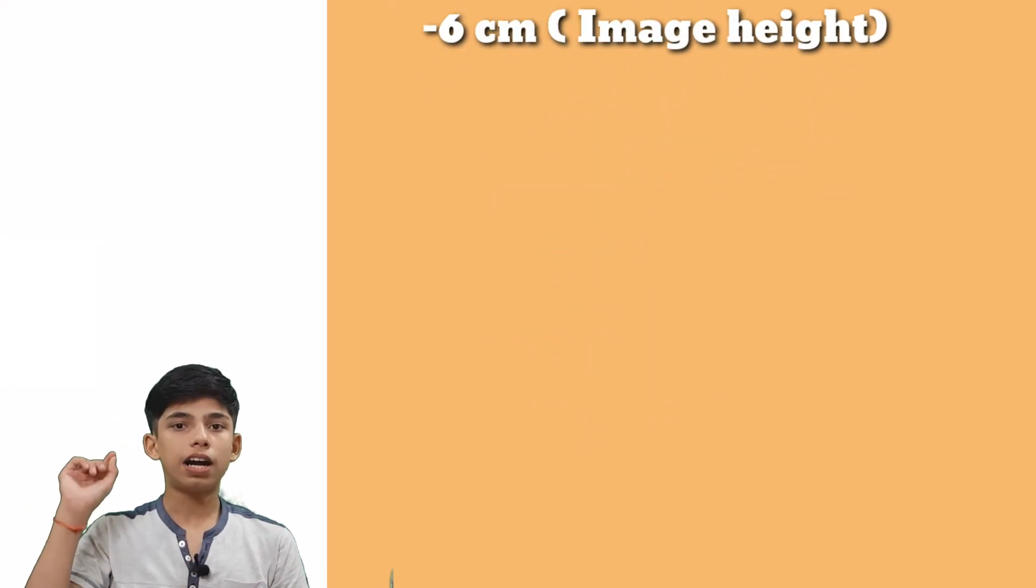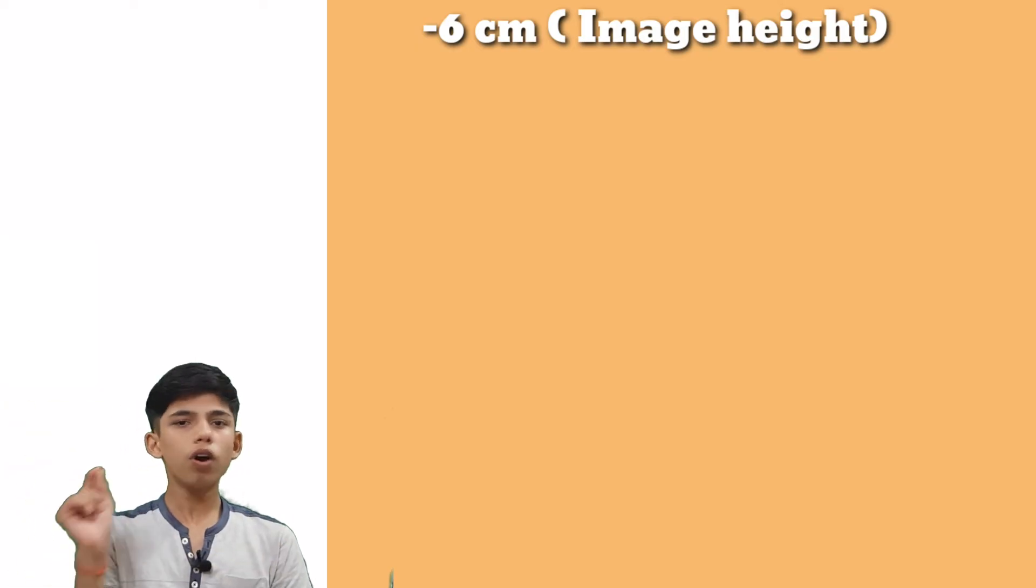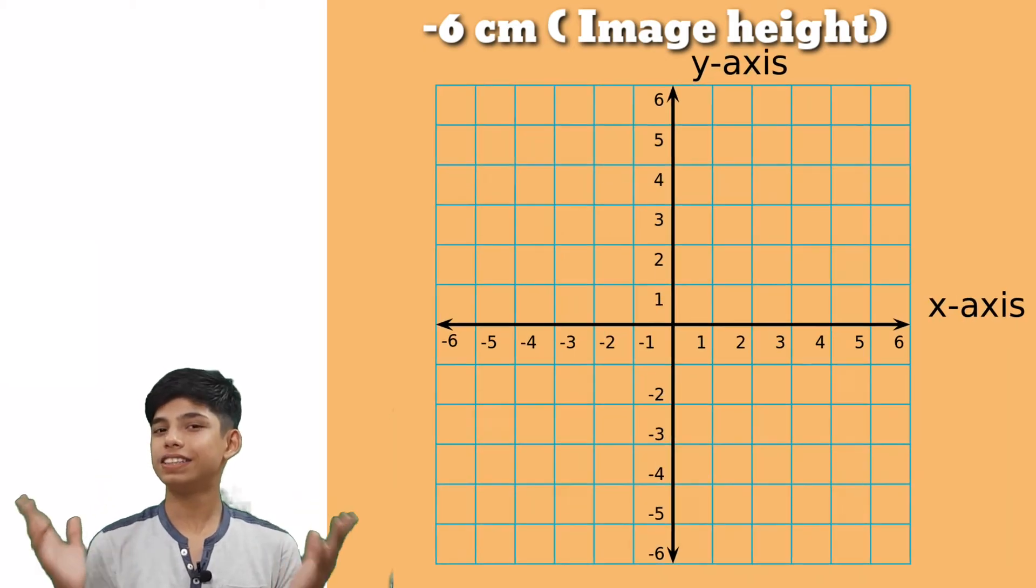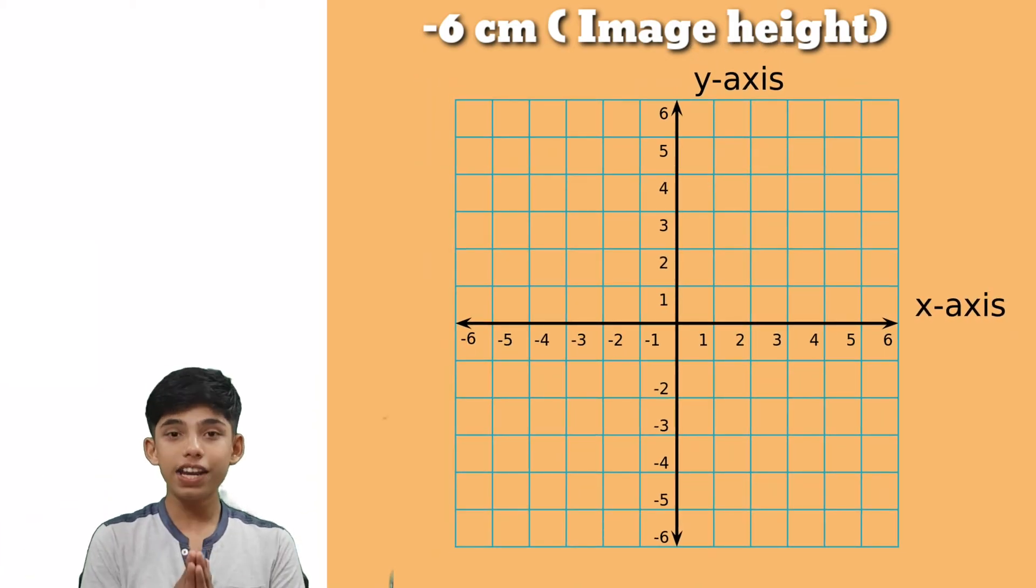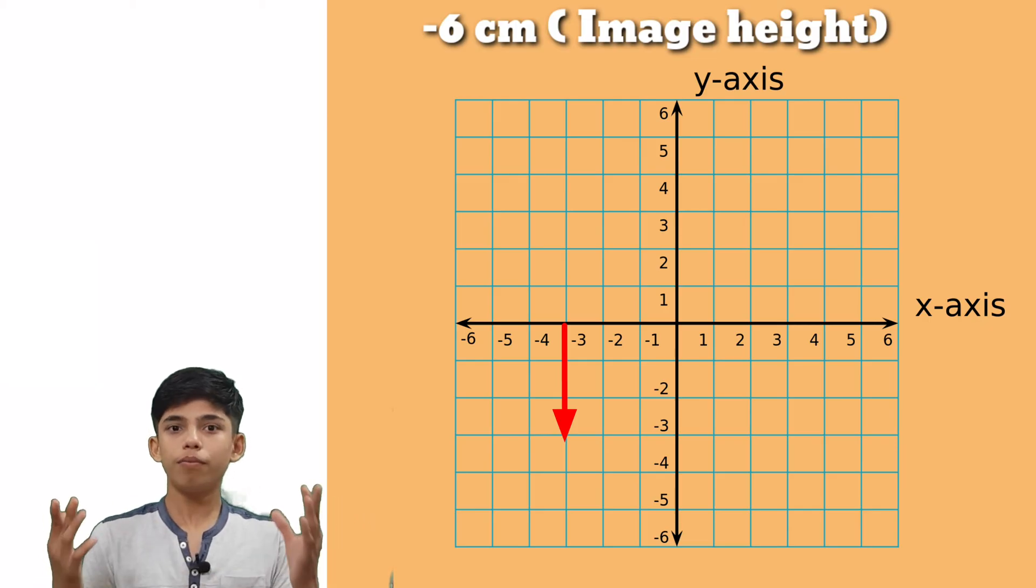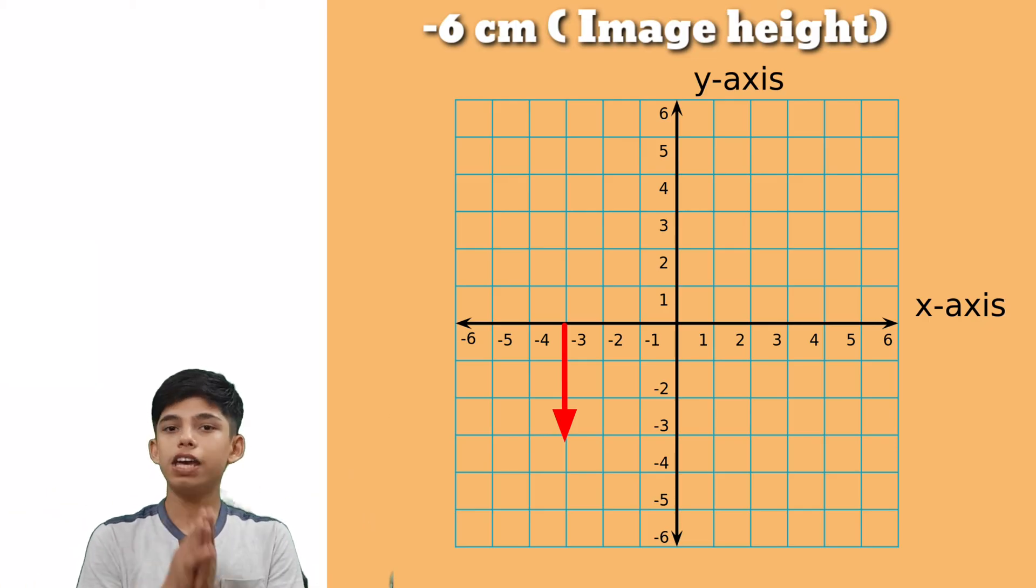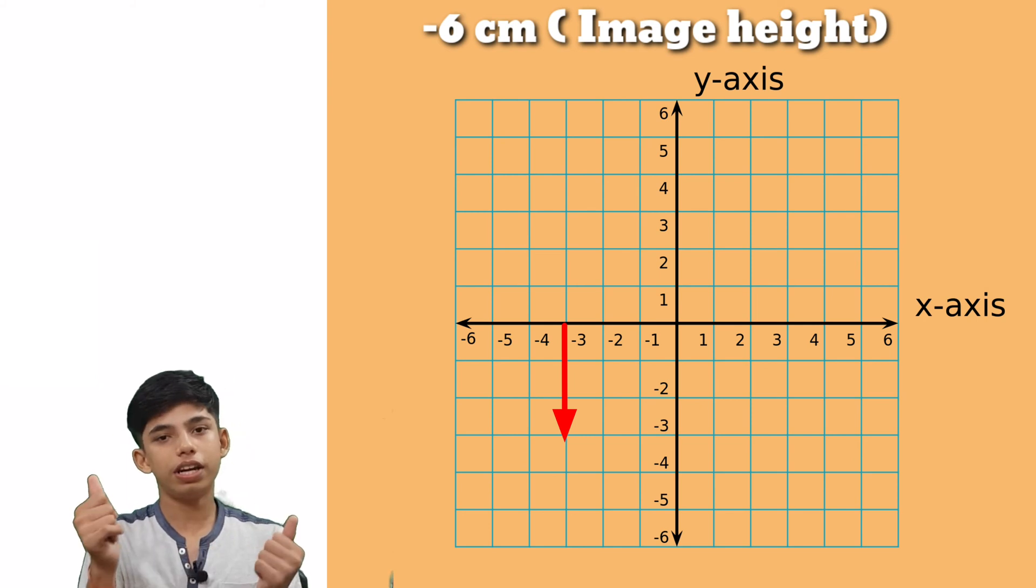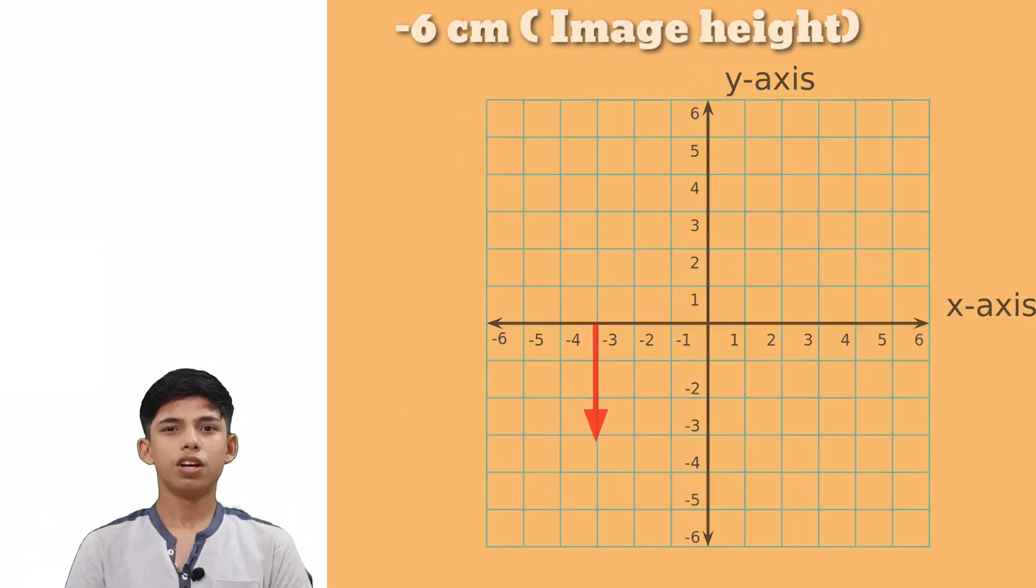Now let's put our minus sign back here. What does this minus sign mean? This minus sign means that our image is inverted because down is also negative. Our image is inverted and our image is greater than the object means greater than the object size. You got it.